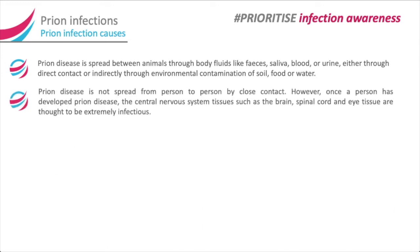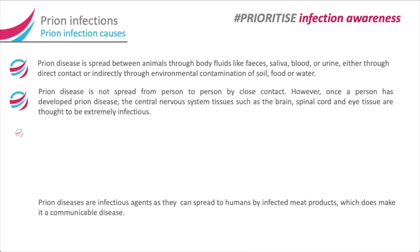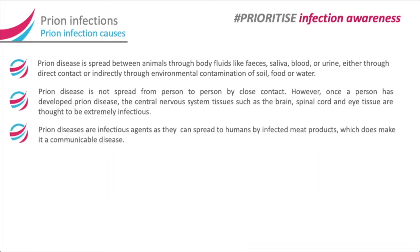Prion disease is not spread from person to person by close contact. However, once a person has developed prion disease, the central nervous system tissues — such as the brain, spinal cord, and eye tissue — are thought to be extremely infectious. Prion diseases are also infectious agents as they can spread to humans by infected meat products, which does make it a communicable disease.